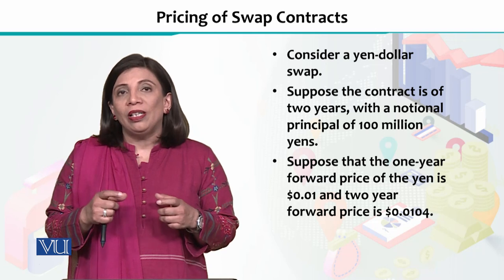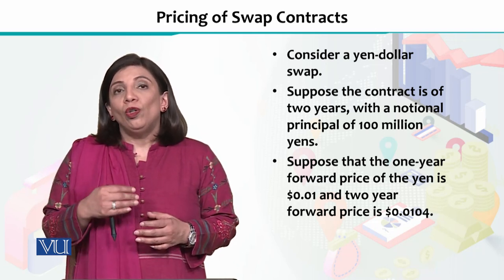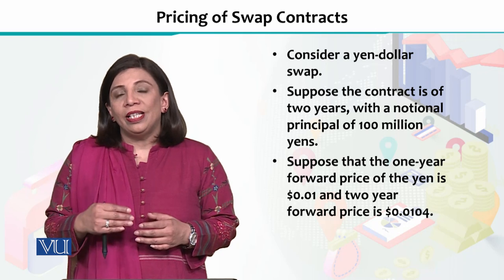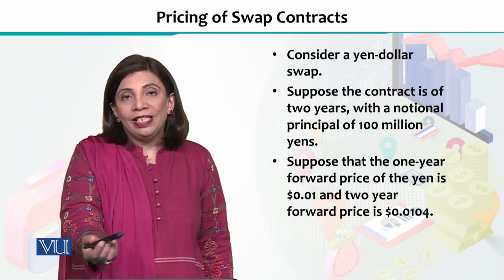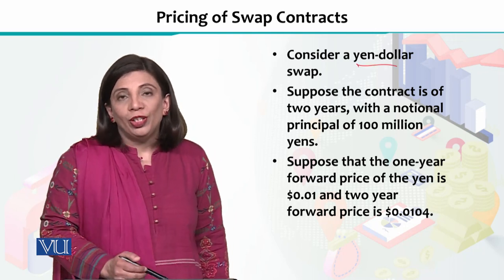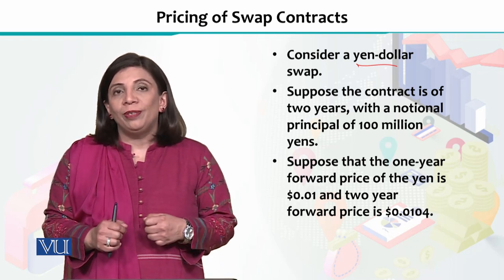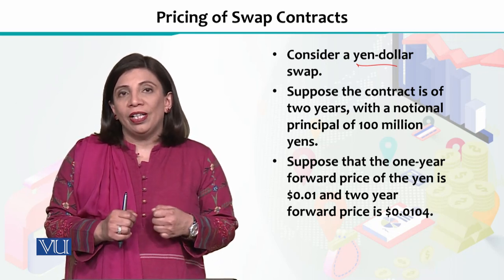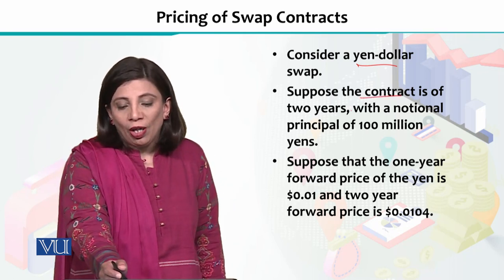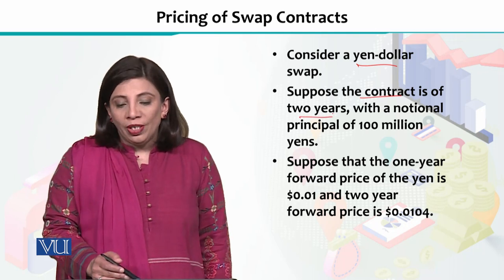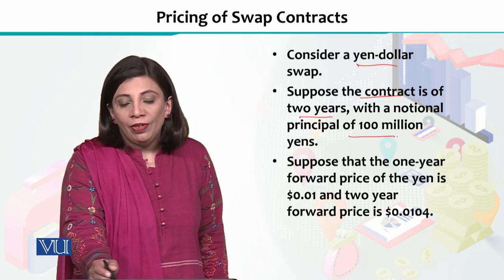When we compare swap contracts with the prices of any financial instrument, there are some things to keep in mind. This is what we are going to understand in this section. Suppose, in this example, we have a yen-dollar swap — that means you have to exchange yen and dollars. We are assuming the contract is for 2 years.